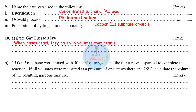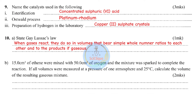Question ten part a — state Gay-Lussac's law: when gases react, they do so in volumes that bear simple whole number ratios to each other and to the products, if gaseous. Part b: 15 cm³ of ethene were mixed with 50 cm³ of oxygen and the mixture was sparked to complete the reaction. All volumes were measured at 1 atmosphere and 25°C. Calculate the volume of the resulting gaseous mixture.